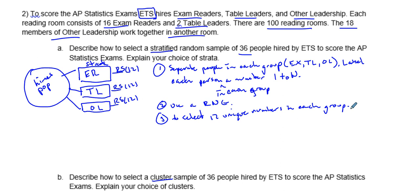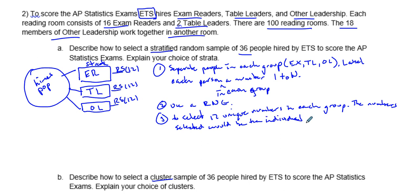The numbers selected would be the individuals chosen for the sample. So the steps are: separate into groups, label each person a number one to n, use a random number generator, and select 12 unique numbers per group. That's one way of writing out a stratified random sample.